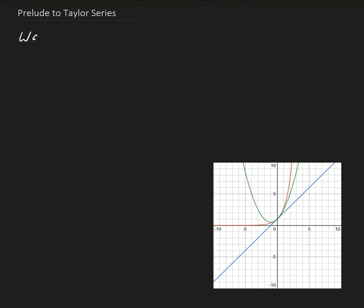So we want to approximate e to the x with a first degree polynomial of the form a0 plus a1x. Here a1 is the slope and a0 is the y-intercept. Obviously this is not going to be a great approximation, but it's a place where we can start — we can start with an idea and then expand it from there.